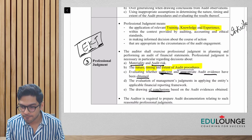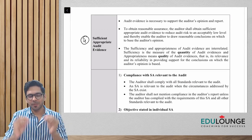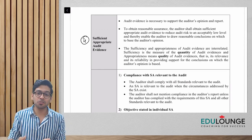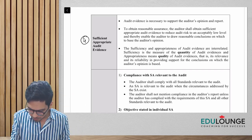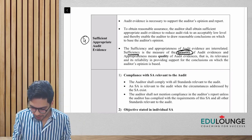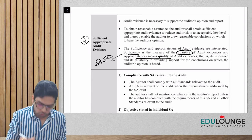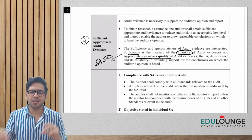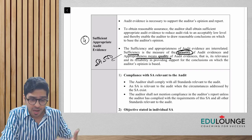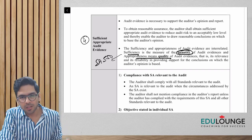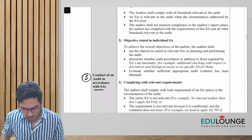Professional judgment applies throughout the audit: determining materiality, assessing audit risk, deciding the nature, timing and extent of procedures, and evaluating whether sufficient and appropriate evidence has been obtained. Two auditors may reach different conclusions — one applying two procedures, another applying five — and neither is necessarily wrong. It is a matter of professional judgment, as long as it is backed by experience, knowledge, and training.